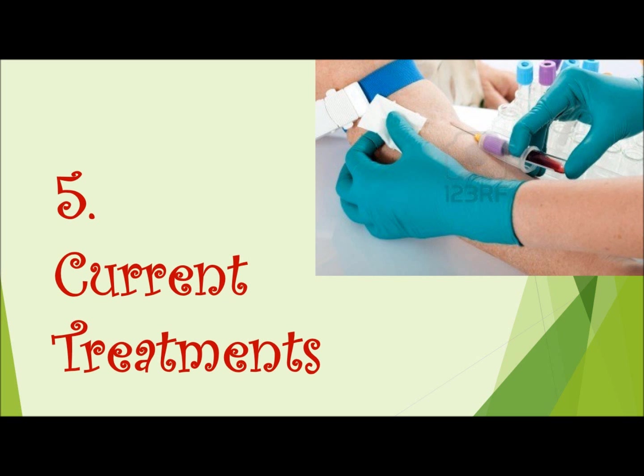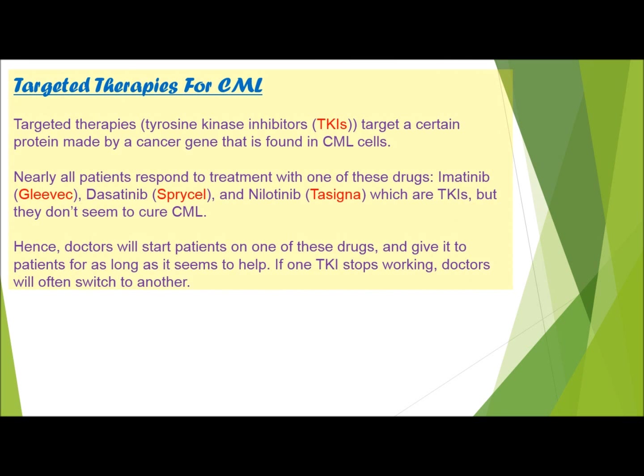The BCR-ABL gene is a current treatment target. Targeted therapies for CML — tyrosine kinase inhibitors, TKIs — target a certain protein made by a cancer gene found in CML cells. Nearly all patients respond to treatment with one of these drugs: Imatinib (Gleevec), Dasatinib, Sprycel, and Nilotinib (Tasigna), which are TKIs, but they don't seem to cure CML. Doctors will start patients with one of these drugs and give it to patients for as long as it seems to help.